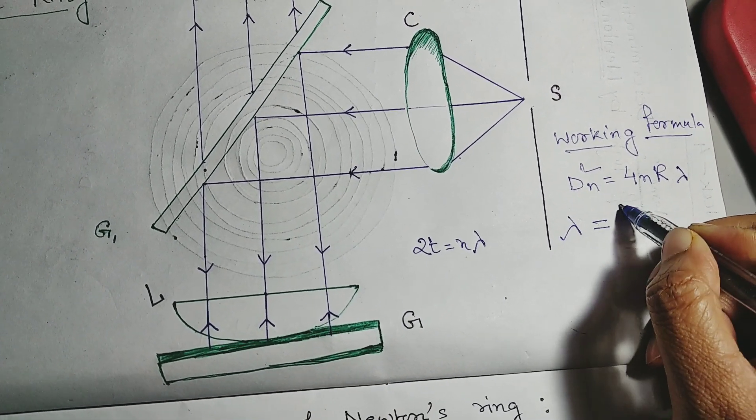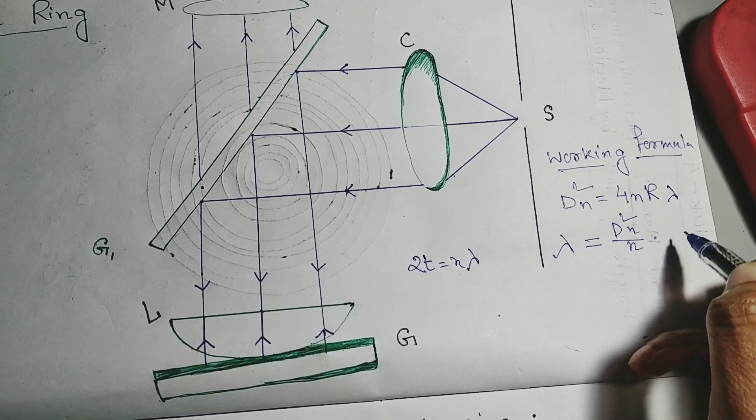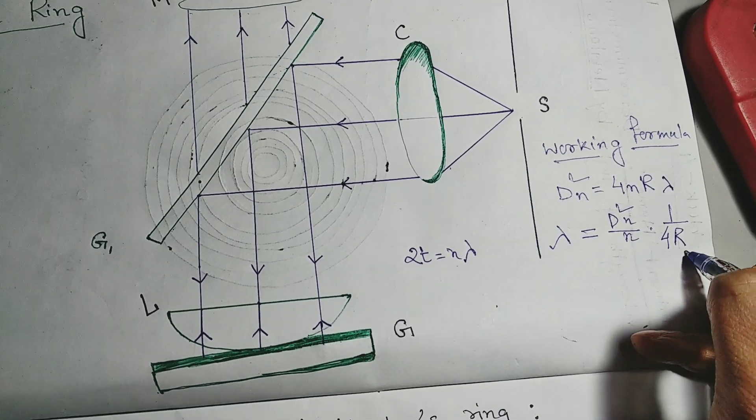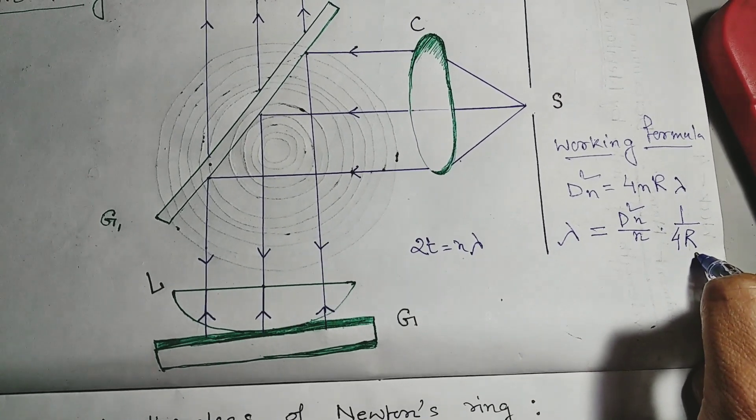That is d square n by small n into 1 by 4 into capital R. R is the radius of curvature. Here it is 120 cm.